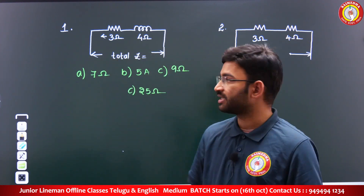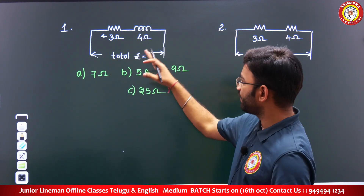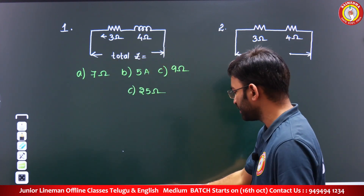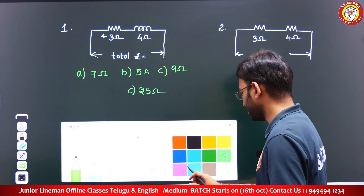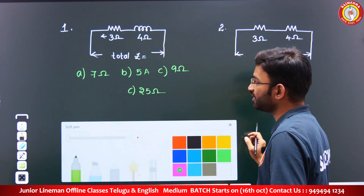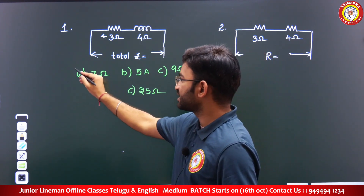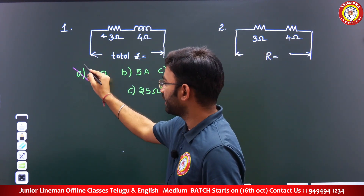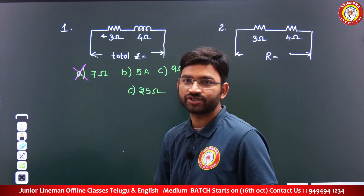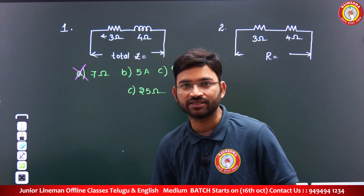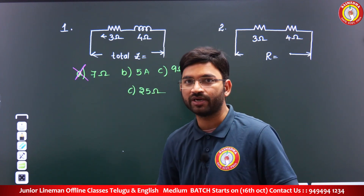Many will say the answer is 3 plus 4 equals 7. So the answer is 7 ohms? 3 plus 4 is 7, right? But that is the biggest wrong answer. Because in this type of question, we must first carefully check what type of load is given.